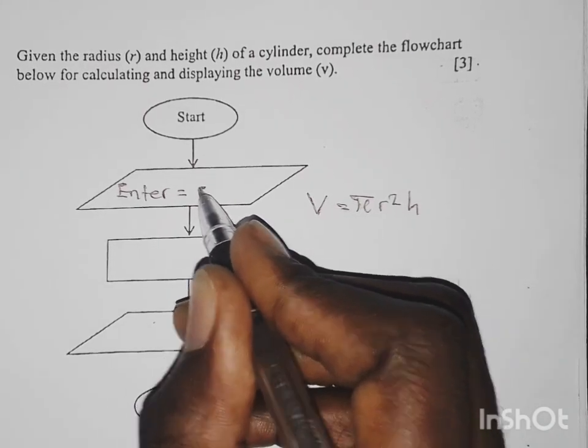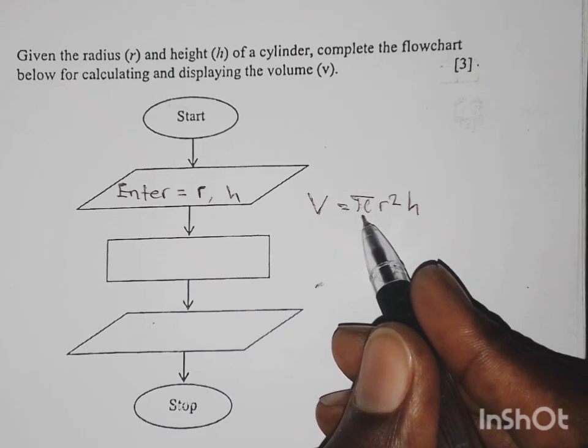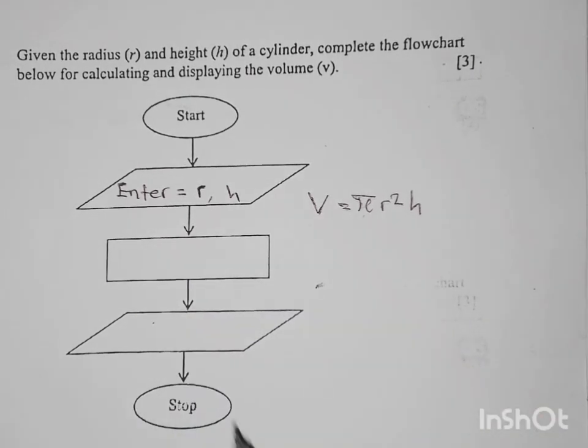V equals pi times r times r, and each letter must be separated by a comma. R comma h, because pi is a number.